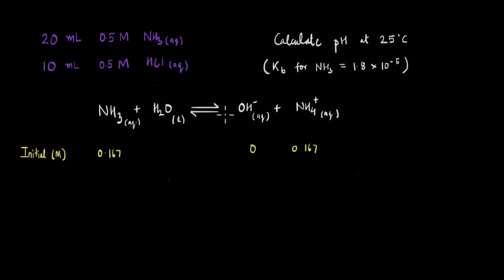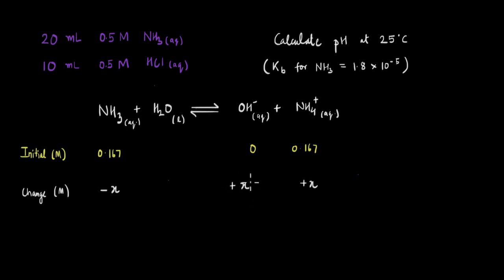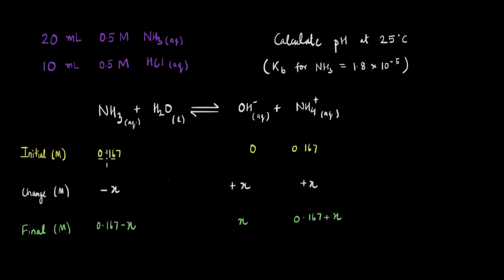As the reaction proceeds to equilibrium, let the change in molar concentration of NH₃ be −x. Because the mole ratio of NH₃ to OH⁻ is 1:1, the OH⁻ formed is +x. Similarly, the change in NH₄⁺ is also +x. So at equilibrium: [NH₃] = 0.167 − x, [OH⁻] = x, and [NH₄⁺] = 0.167 + x.